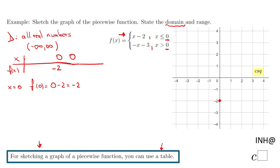Now I need another point for the first piece, so I'll go to the left of zero and try x equals negative 1. Since −1 is less than or equal to 0, we use the first piece: negative 1 minus 2 equals negative 3. So the second point is (−1, −3).